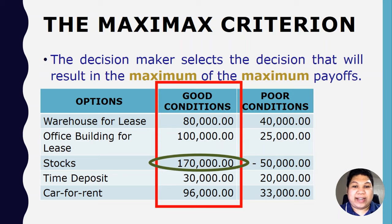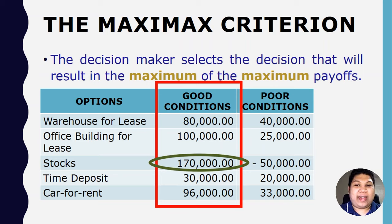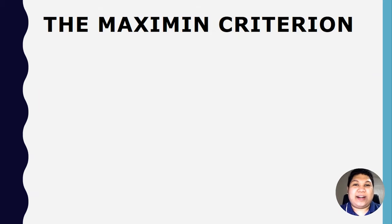However, a caveat: this could not actually happen as expected, because this decision relies entirely on the optimism of the decision maker. The good condition is not guaranteed. So if you are that kind of very optimistic decision maker, you choose investing in stocks under the maximax criterion.